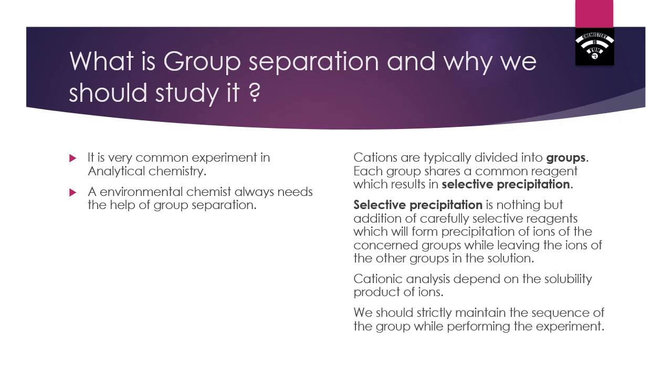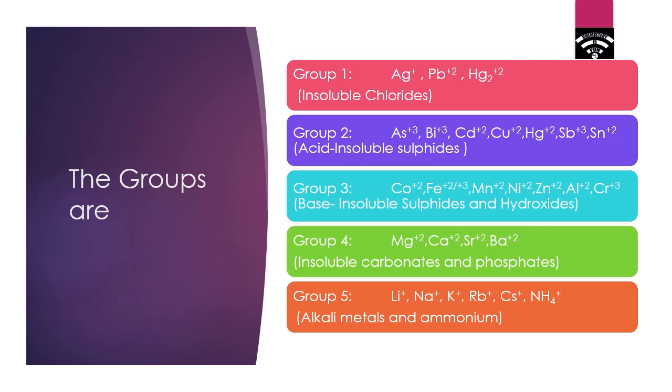Here we should strictly maintain the sequence of the groups while performing the experiment. Here are the five groups. You can see that mercury, lead, and silver form insoluble chlorides and they are in Group 1.